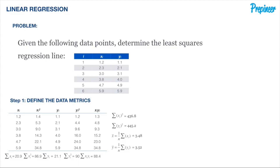The first step is to define the various metrics related to the data we're given. I use a table to complete all of these calculations in an organized manner. This is what the expanded table looks like — our original data is in the first and third columns, and we just build out the rest from there.